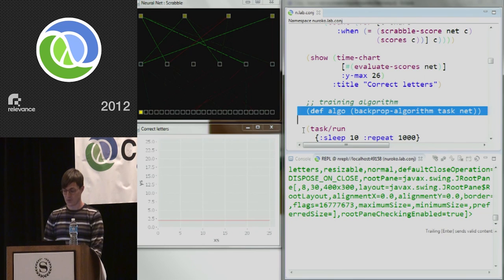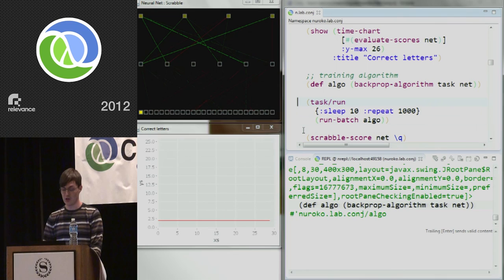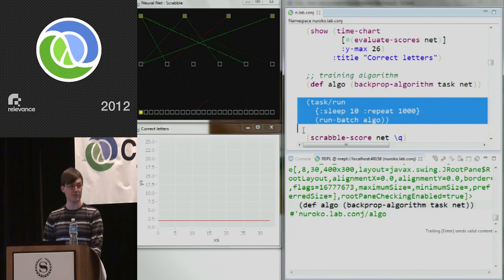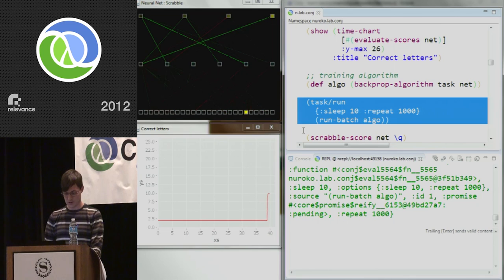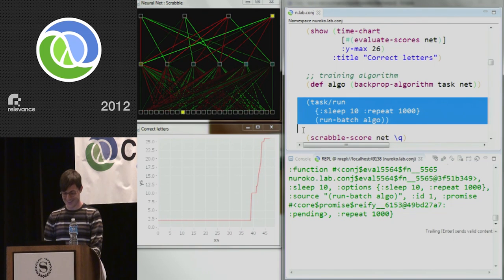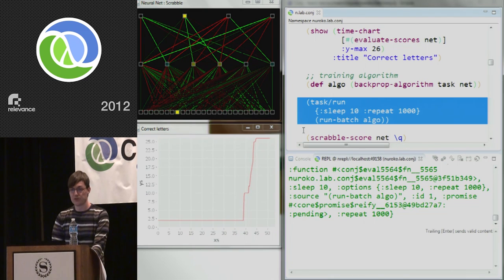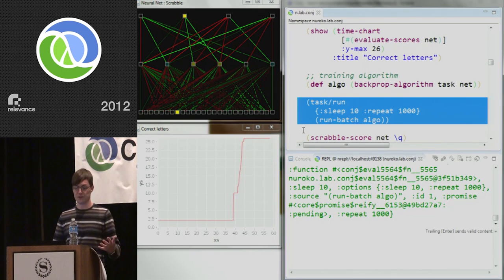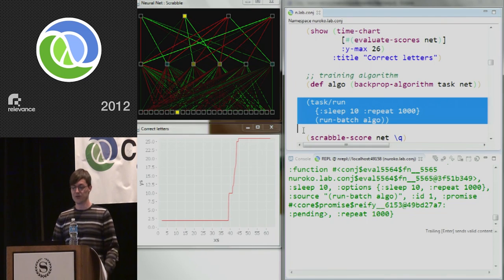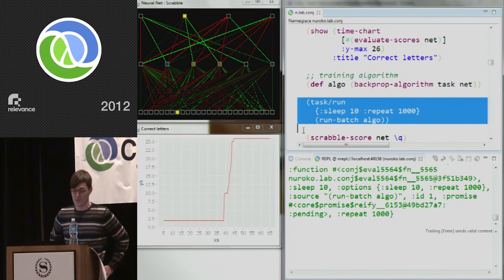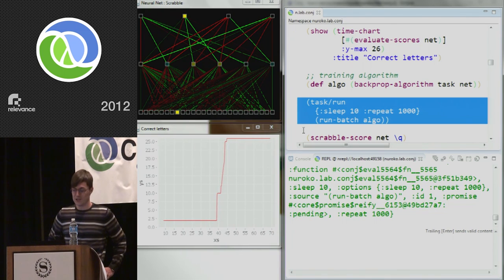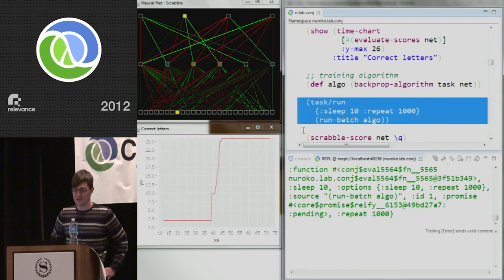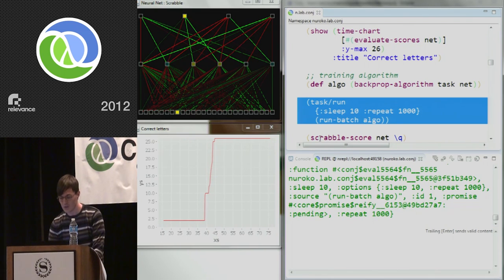And currently it seems to be getting two of the scores right. And that's completely by chance. The network happens to be producing the right answer for two letters. So let's do some training. We're going to use a standard backpropagation algorithm. And we're just going to run that on the network for a short time and see what it does. So watch what happens to the evaluation. And also watch what happens to the network. Nice. OK. So what you saw there was the score has just gone up from 2 to 26. So it's now getting every single digit right. It's solved this problem. And also the colors changed on the neural network as the weights got adjusted to learn this problem.